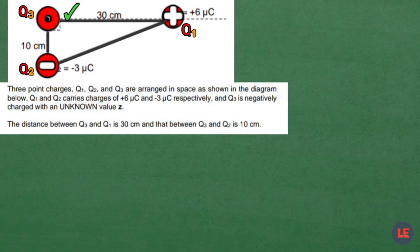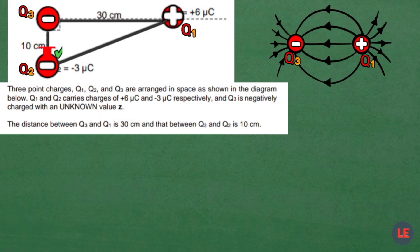This charge Q3 is not given magnitude, but we are told that it is negative. This statement is helpful which makes it easier for us to draw electric field patterns on Q1 and Q3. Take note that we ignore the effect of Q2 on these field patterns.